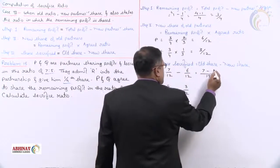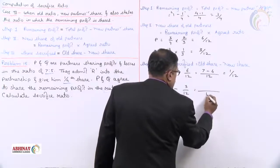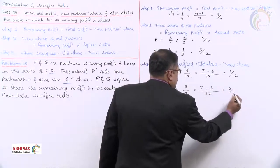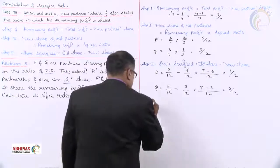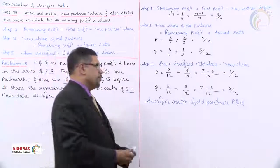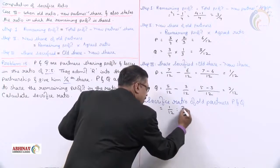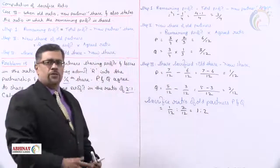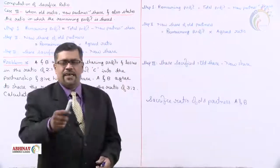Denominator is 12 throughout. P's sacrifice: 7/12 minus 6/12 = 1/12. Q's sacrifice: 5/12 minus 3/12 = 2/12. Sacrifice ratio of P and Q is 1/12 : 2/12. Since denominators are the same, sacrifice ratio is 1:2. This is how we solve Case 3.